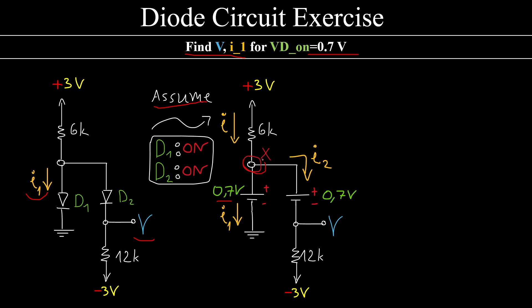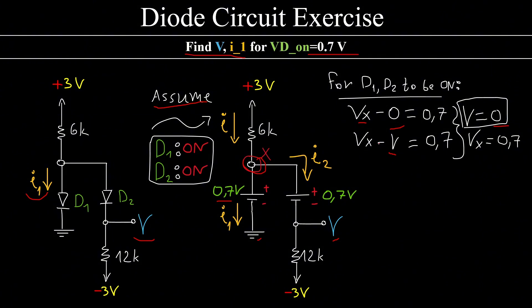I'm going to name this node node X, I'm going to name this current I and this current I2 arbitrarily, and I'm going to say that for both of the diodes to be on, two conditions must hold true. First, the voltage Vx minus 0 must be 0.7V. The voltage Vx minus V must be 0.7V also. That means V must be 0 and Vx must be 0.7V.